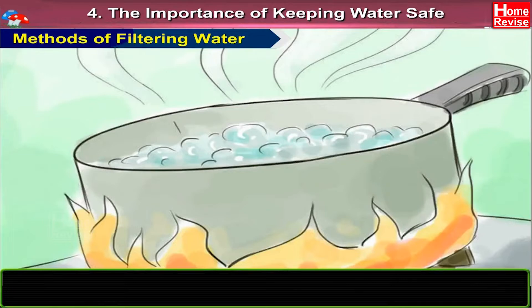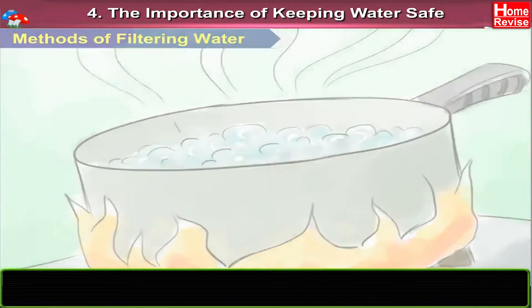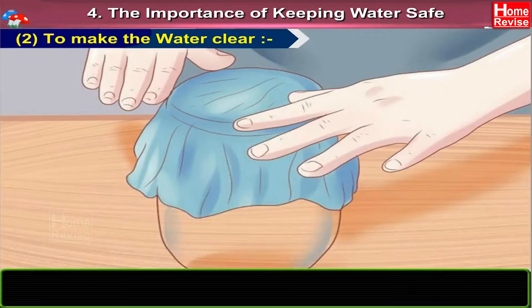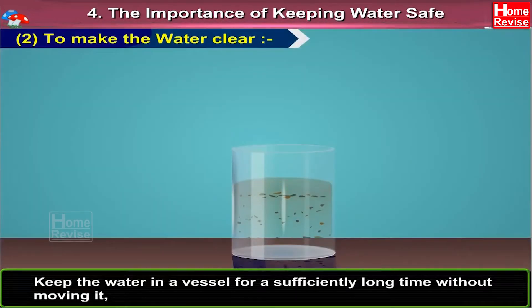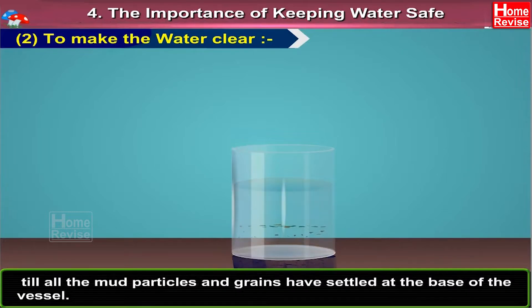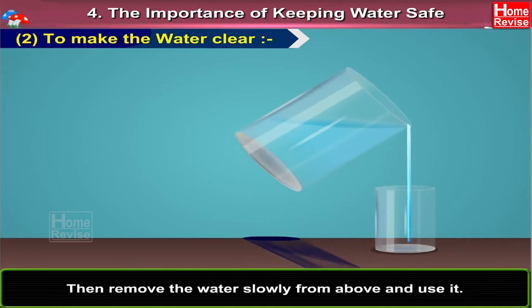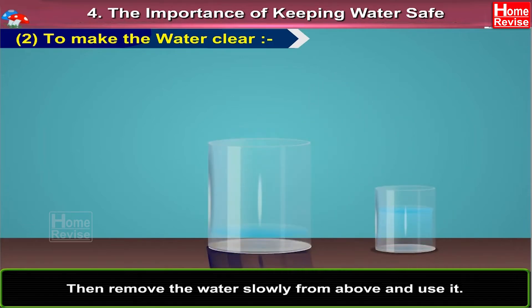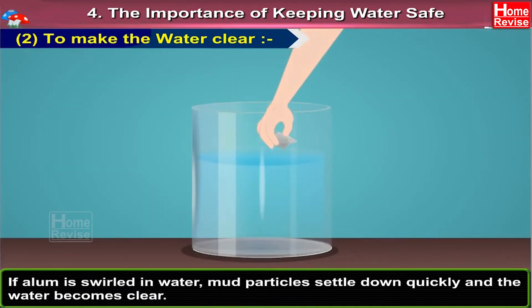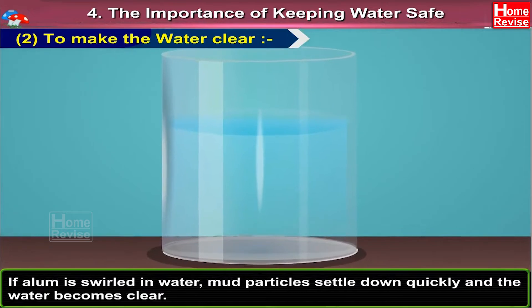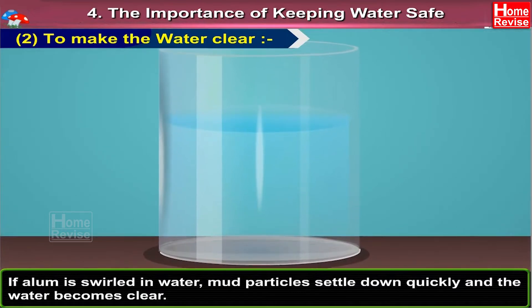Methods of Filtering Water. Method 2: To Make the Water Clear. Keep the water in a vessel for a sufficiently long time without moving it, till all the mud particles and grains have settled at the base of the vessel. Then remove the water slowly from above and use it. If alum is swirled in water, mud particles settle down quickly and the water becomes clear.